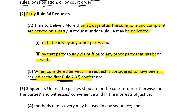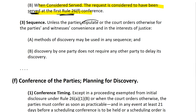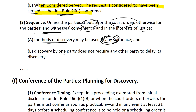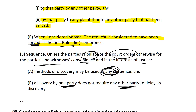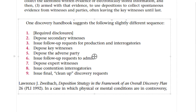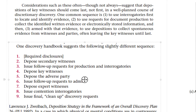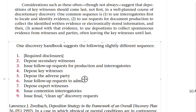Now the next thing to think about is the sequence of discovery. Unless there's a stipulation or court order otherwise, for convenience and justice for the parties and witnesses, you can use methods of discovery in any sequence. The fact that one party discovers in one order does not require another party to delay its discovery. There's a helpful blurb in your casebook where Glannon talks about some of the methods that might be used for discovery.